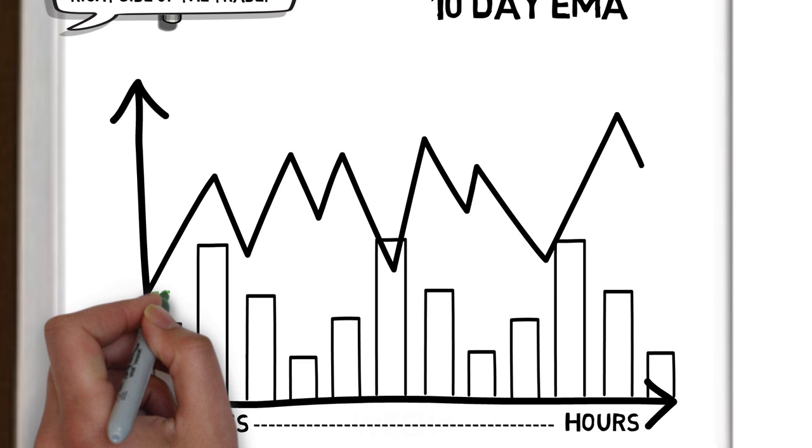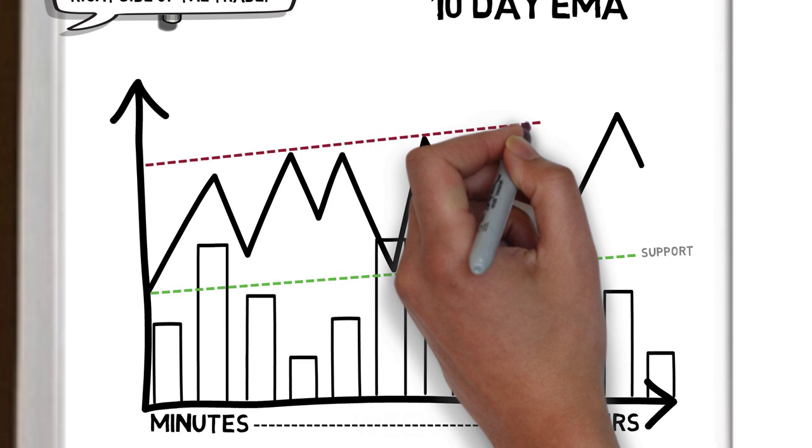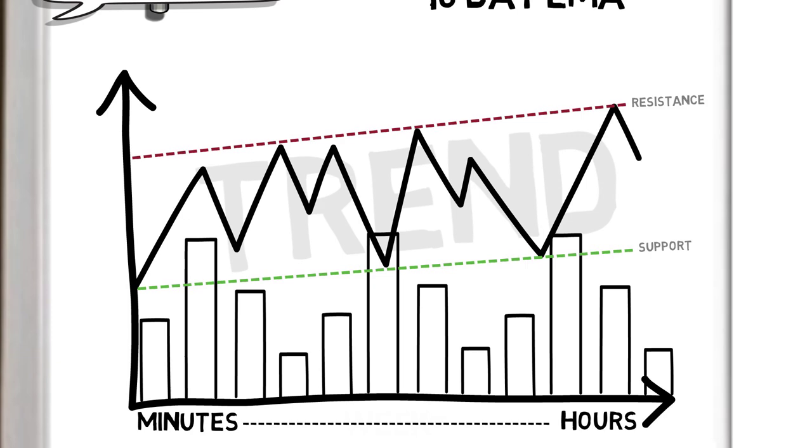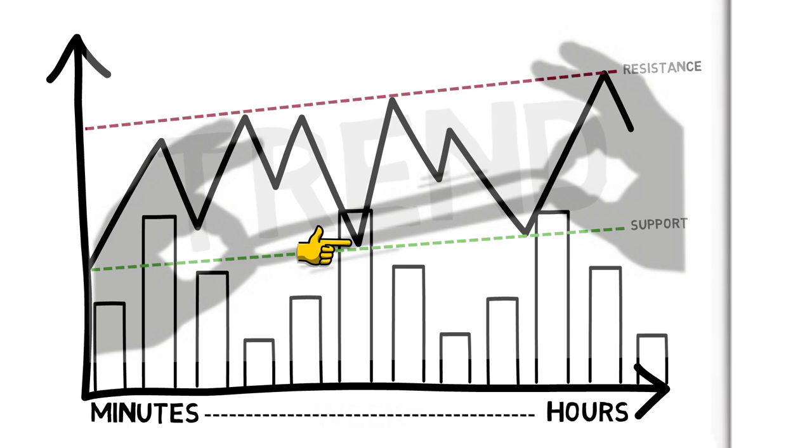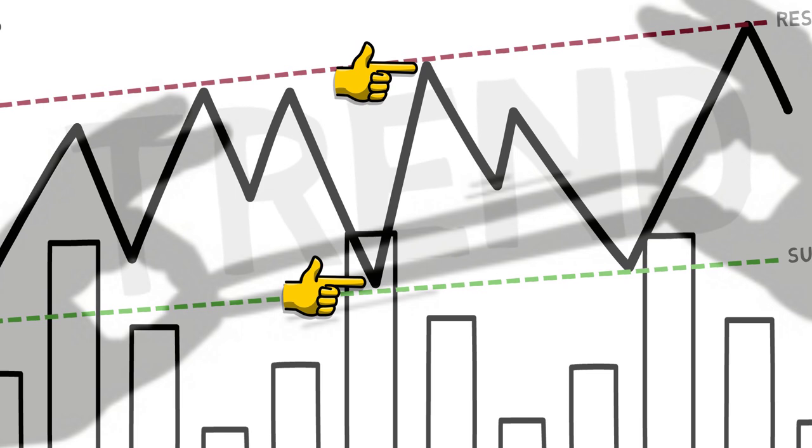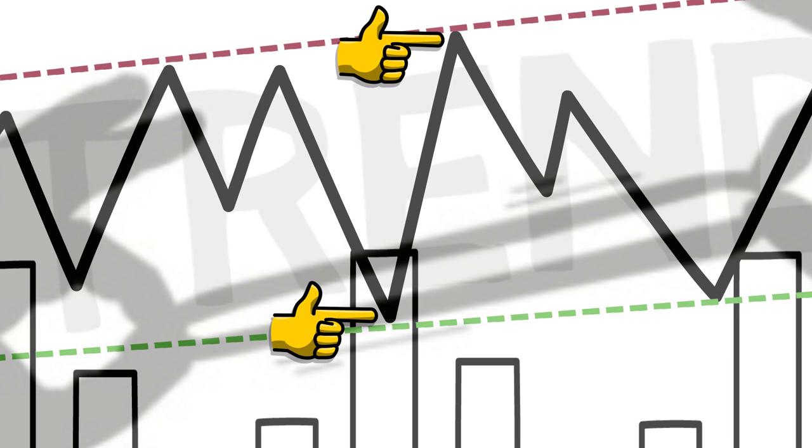The footprints left by this price volatility can leave clues for high-probability entries. For example, Schwartz would draw support and resistance lines like the ones shown here. These often also confirm the overall trend of the time frame in question. His philosophy is to buy strong stocks showing temporary weakness, much like a rubber band having to snap back. Sometimes the price is slack, and sometimes it is overstretched. Buying at a time when prices slack, at a support level above the 10-day EMA, and in a general upward trend, puts the odds of success in Schwartz's favor.